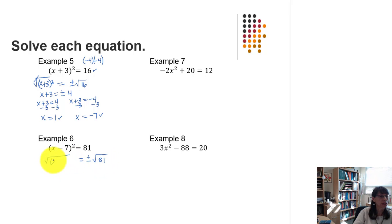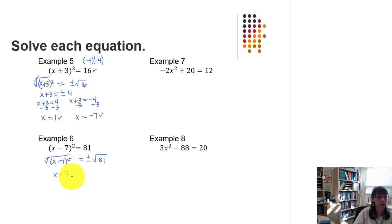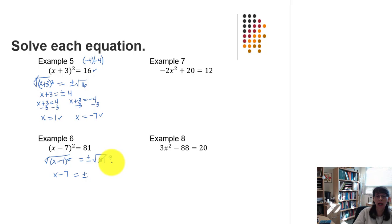We have the quantity x minus 7 squared under the radical. The opposite operations cancel each other out, releasing x minus 7 from the radical, equal to plus or minus the square root of 81. Since 81 is a perfect square, that clears the radical as 9, giving us x minus 7 equals plus or minus 9.